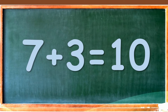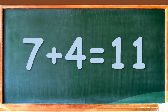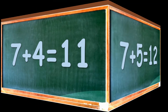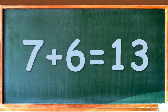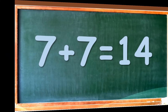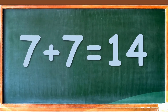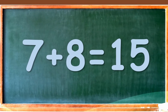7 plus 3 is equal to 10, 7 plus 4 is equal to 11, 7 plus 5 is equal to 12, 7 plus 6 is equal to 13, 7 plus 7 is equal to 14, 7 plus 8 is equal to 15.